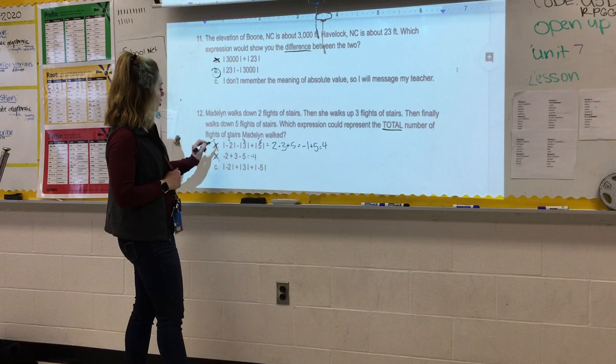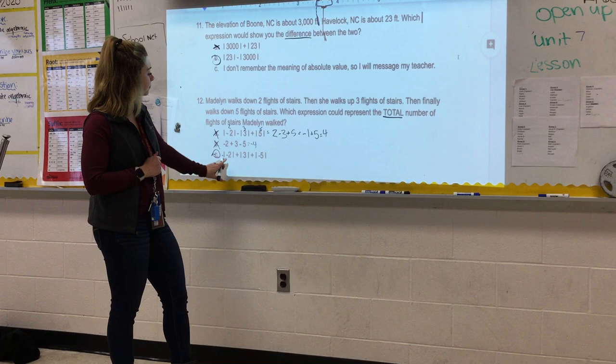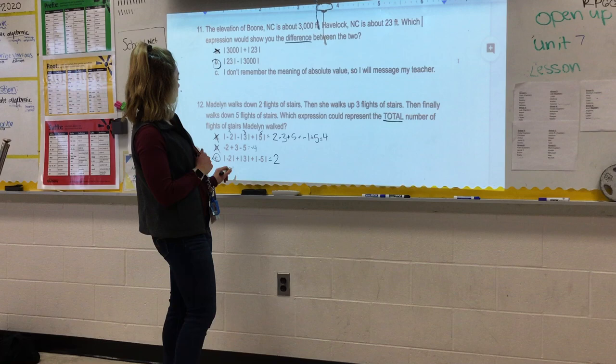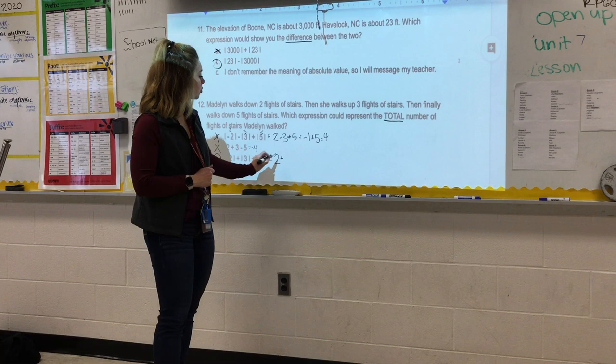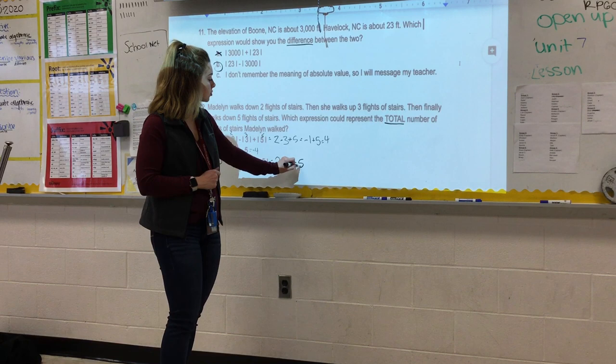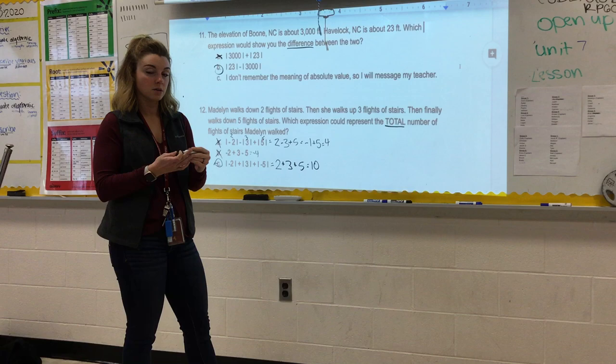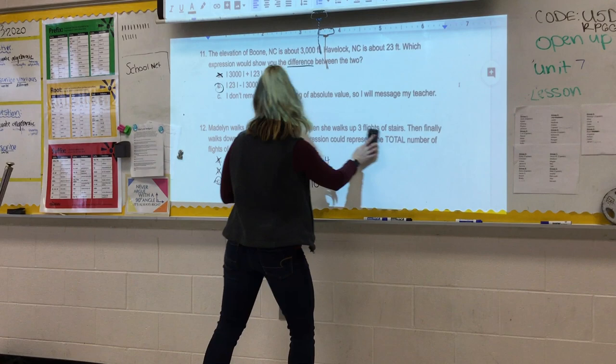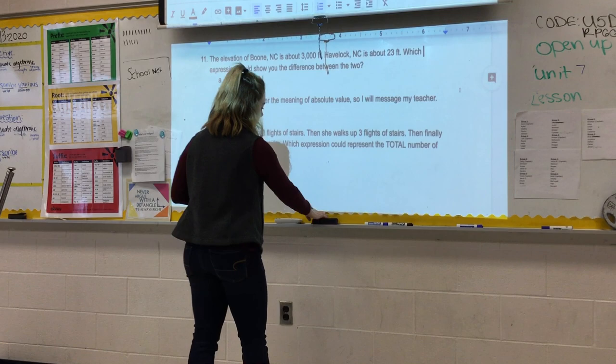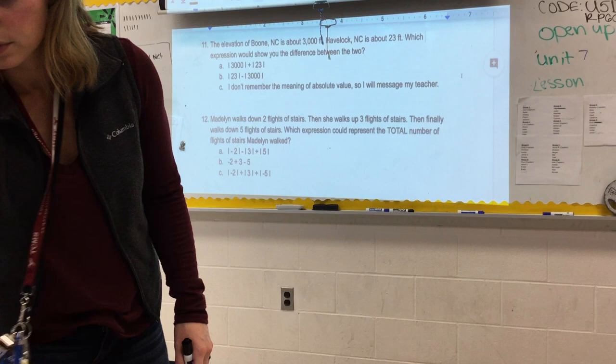So that leaves only C, but let's look at why C is correct. C is telling us the absolute value of two, which is just two plus, or combined because it's asking for the total, combined with the absolute value of three combined with the absolute value of negative five, which we know is just regular five, which would give us that Madeline walked 10 total flights of stairs. Does that make sense? Yes. And these stairs really made a lot of sense because the idea of down being negative and up being positive for the fact that she physically walked all of these stairs. It wasn't like the money where we're subtracting and adding. Yeah.